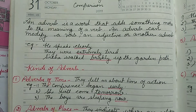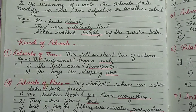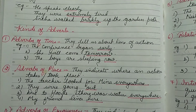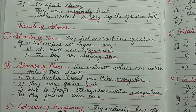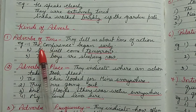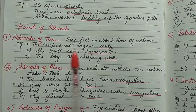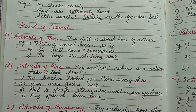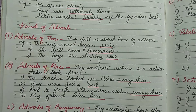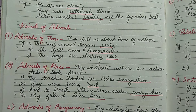Now let us look at the kinds of adverb. I will explain each kind one by one, which will help you understand how they are used according to the demand of the statement. Number one: adverb of time — these tell us about the time of action, that is when the action happened or took place.